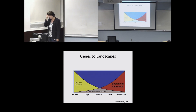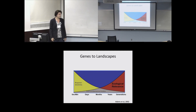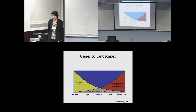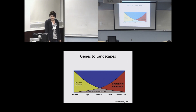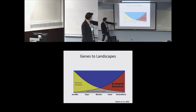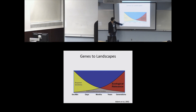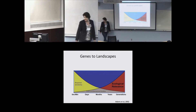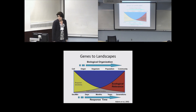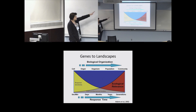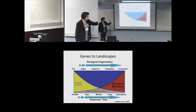I'd like to introduce this slide from Marshall Adams, who was at Oak Ridge. It really sums up the problem in toxicology in a great way. Basically, it's a scaling issue. On one axis, we have a temporal scale moving from minutes, days, months, years, to generations. You can also imagine a biological organization scale going from cell, organ, organism, population, and community — moving up these levels of scale.